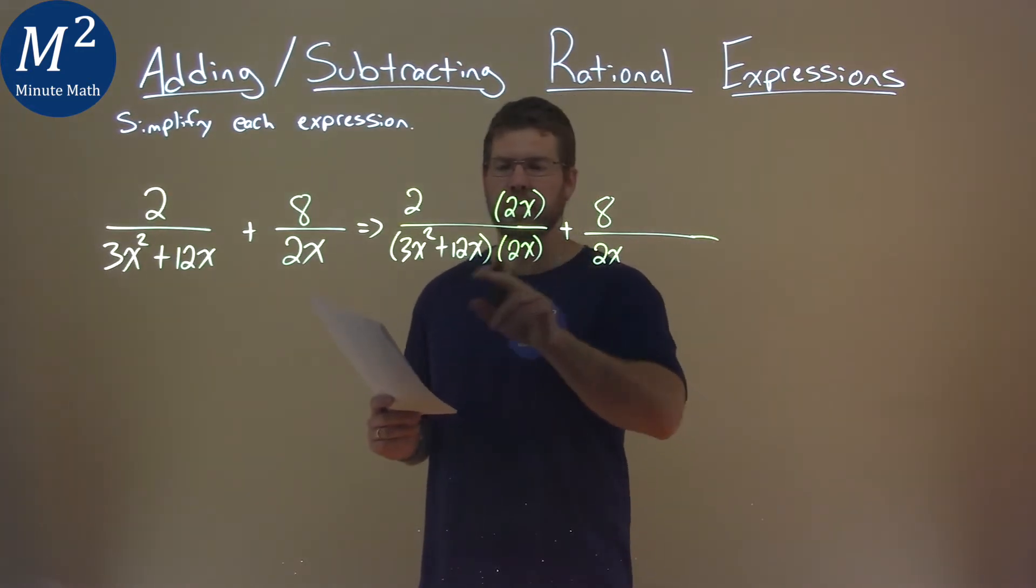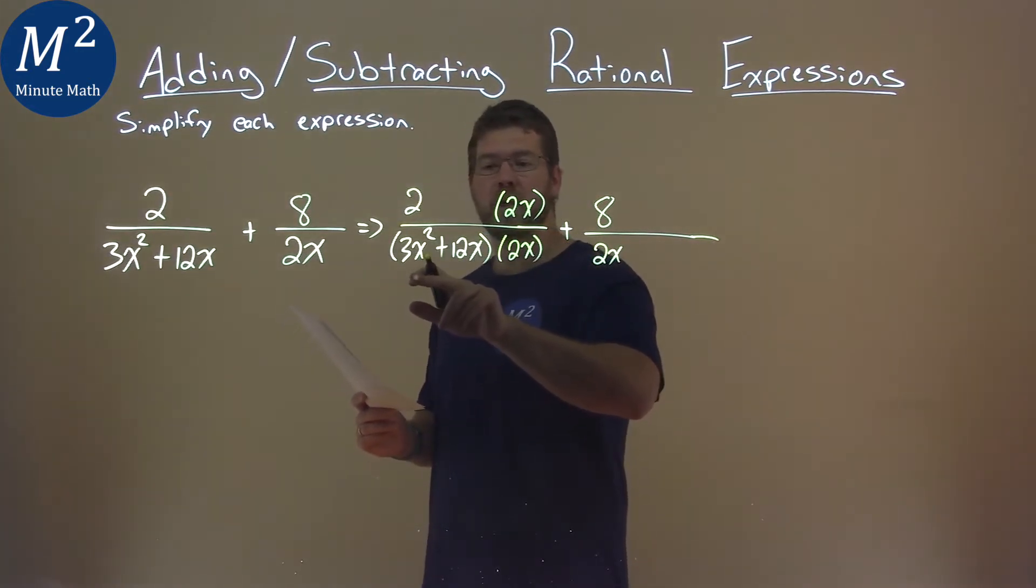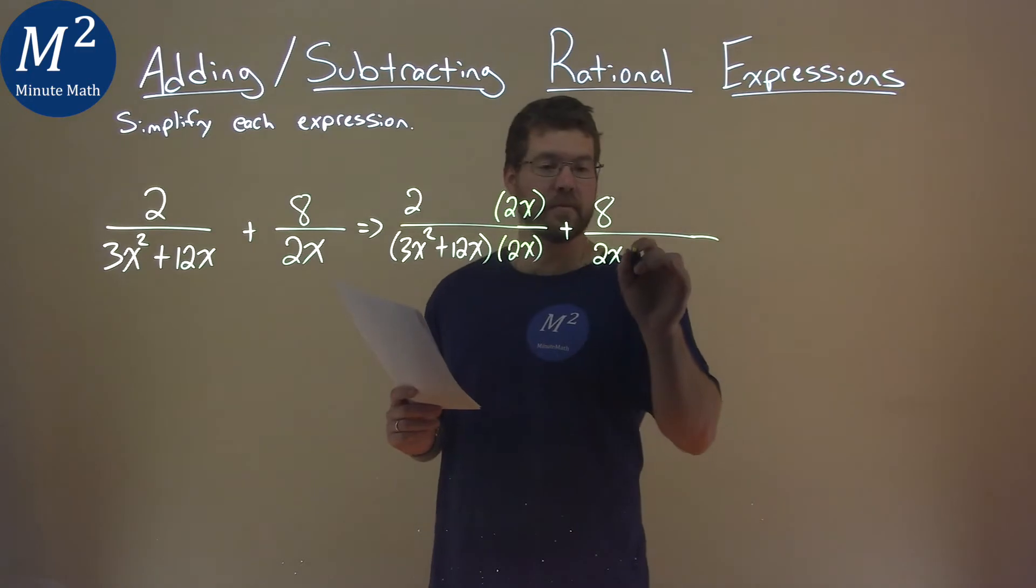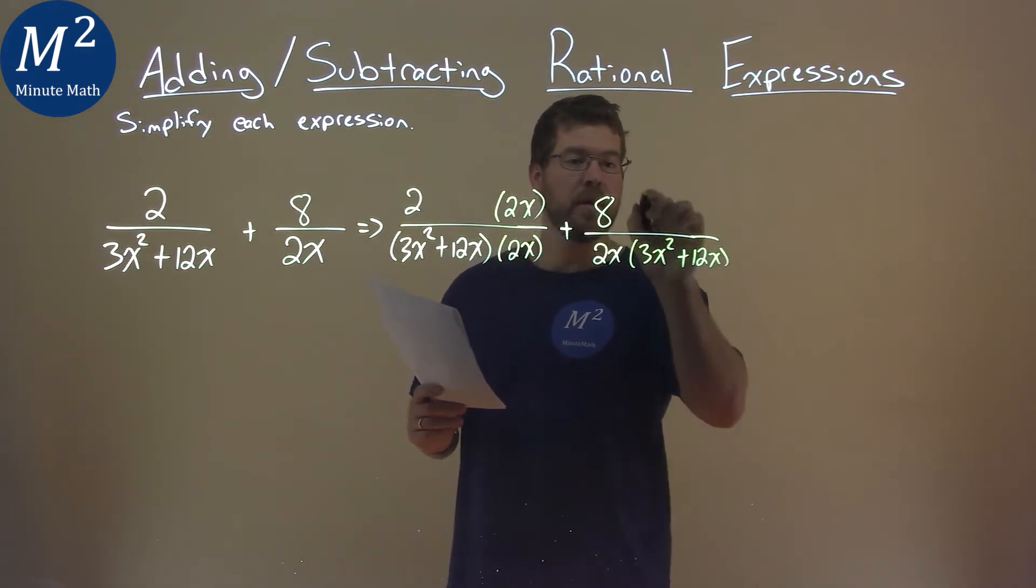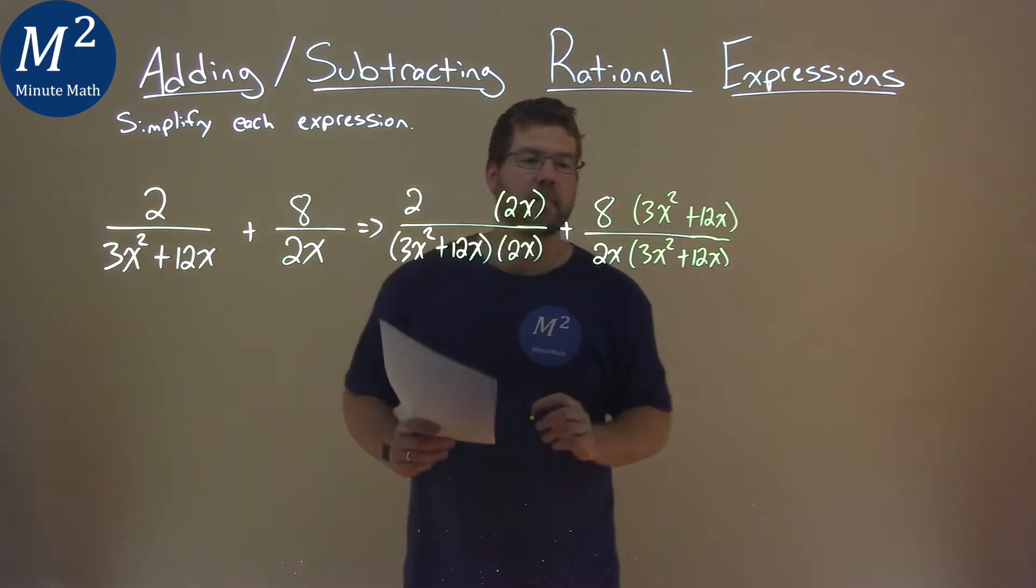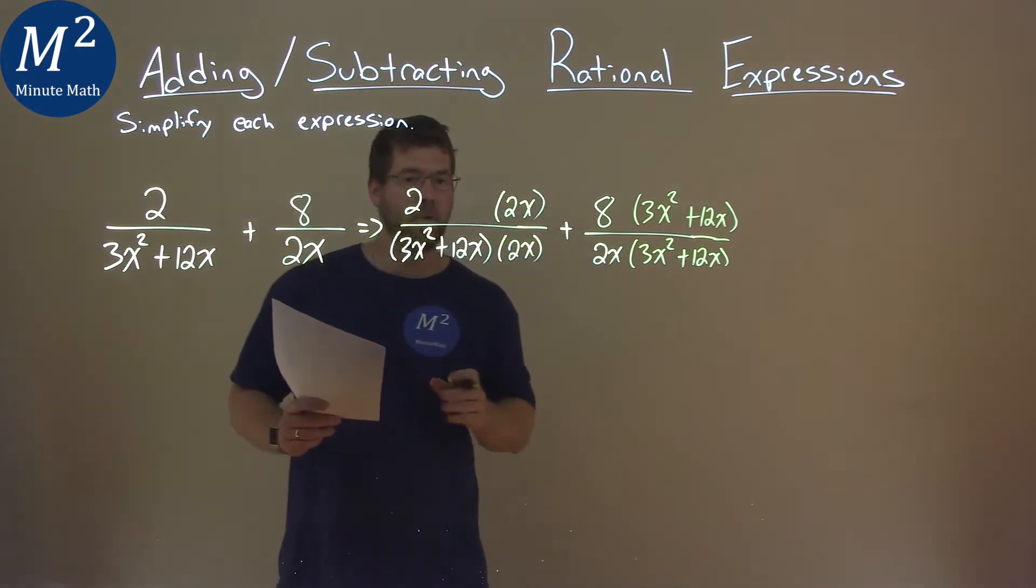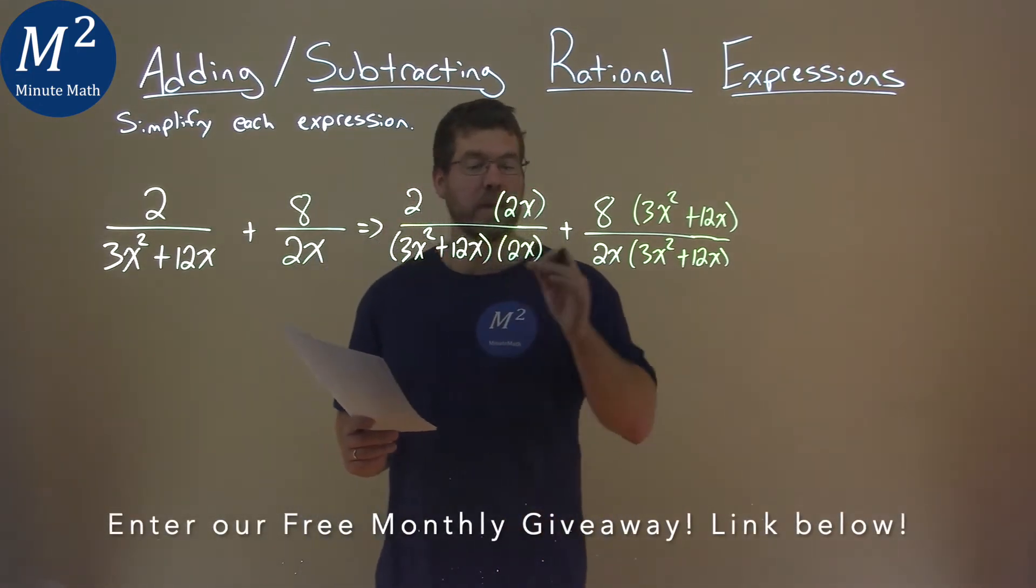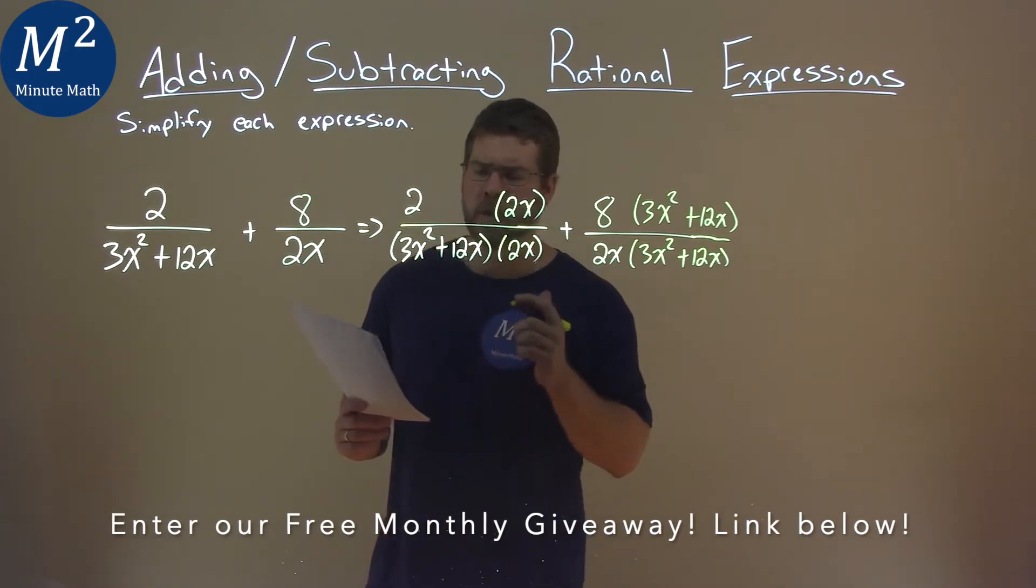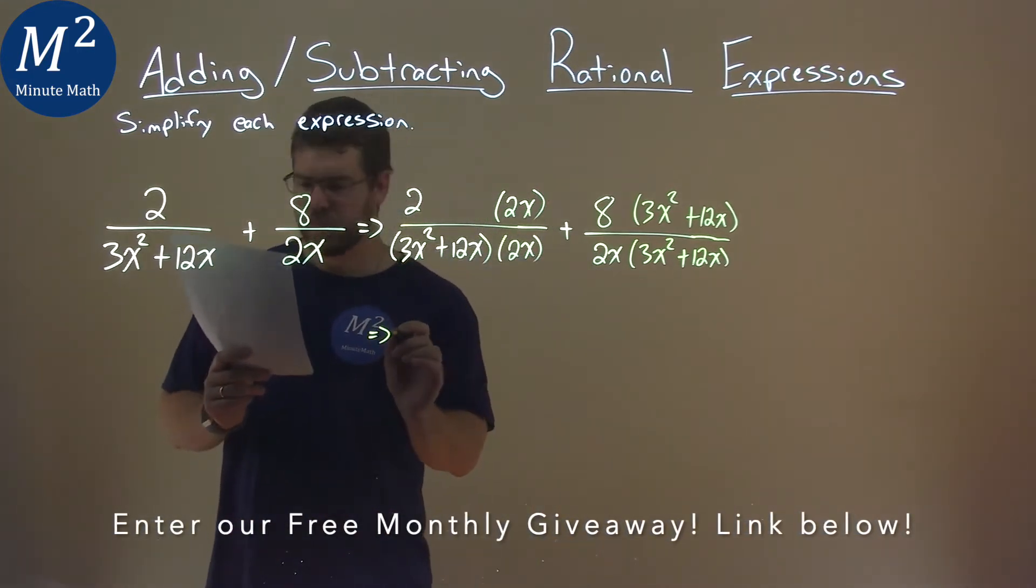Now that I have the same denominator, I'm going to do the same thing with this denominator, 3x squared plus 12x. So 3x squared plus 12x in the numerator and 3x squared plus 12x in the denominator. Now that they're being multiplied out, we have the same base, 3x squared plus 12x multiplied by 2x. So now our denominator here is the same.